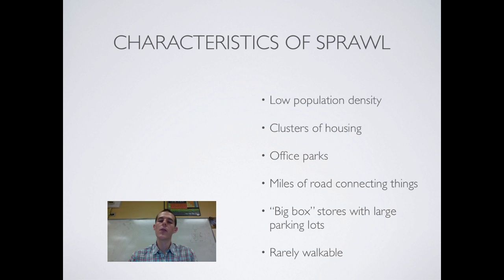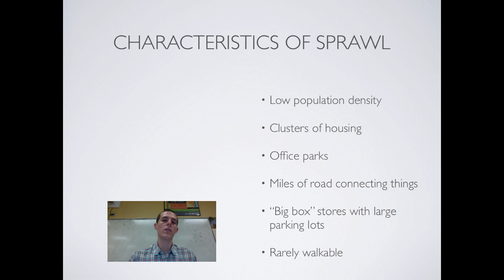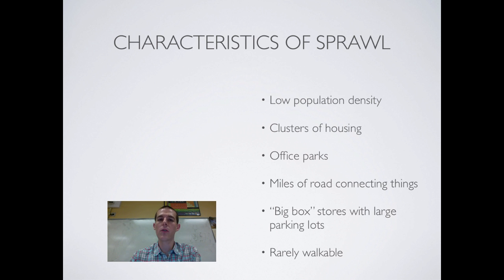Because everything is spread out, you've got miles and miles of roads connecting things. People aren't able to walk to offices, stores, or whatever, since they live in these little developed neighborhoods, so you need roads and a big major road or two connecting the suburban area to the main city. Usually suburban areas also have lots of big box stores — Walmart, Home Depot, Lowe's, Kohl's — with giant parking lots, since there's tons of land available. Rarely are the suburbs walkable; you have to drive to get to whatever you need.